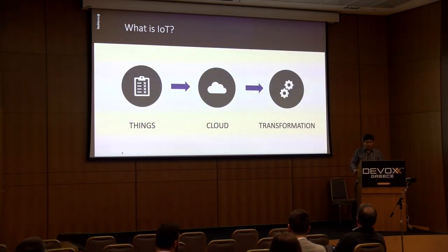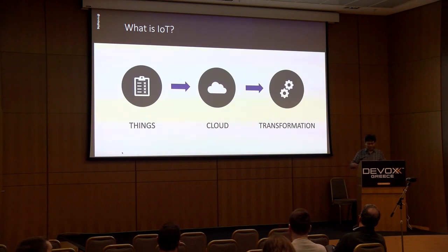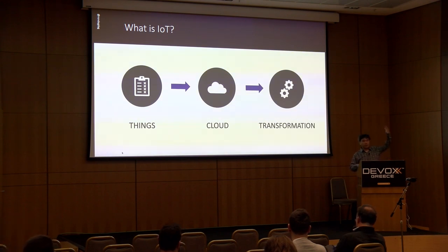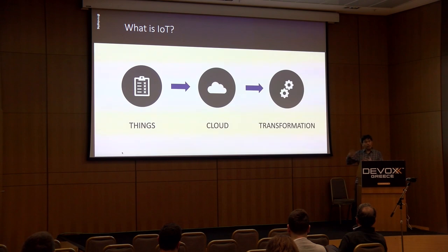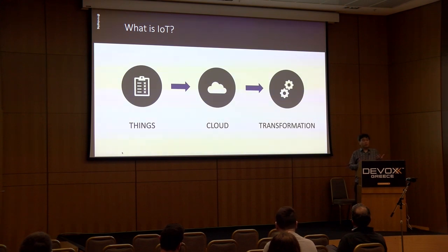So what is Internet of Things? Where there are things, you have data from those things. Things can be a device, or anything that has sensors — flights, machines, etc. You send the data to the cloud and use it to transform your business, get more insights, and gain more capabilities.